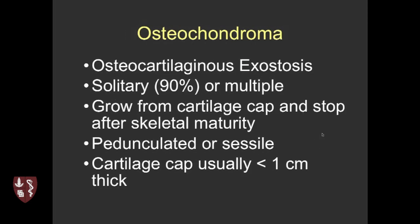Osteochondroma is also known as an exostosis, or osteocartilaginous exostosis. Usually they're solitary, but there are syndromes where you can have multiple hereditary exostoses. They tend to grow from a cartilage cap, and importantly, just like our skeletons overall, they stop growing at skeletal maturity. The problems with malignancy tend to occur in younger patients, though it can occur at later ages as well. There are different shapes — pedunculated versus sessile.